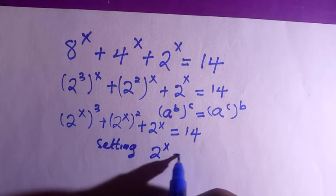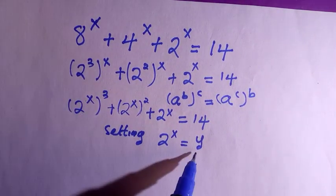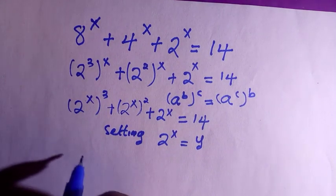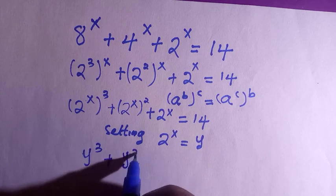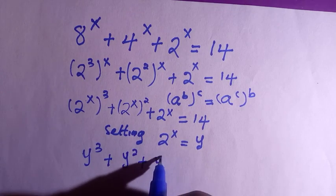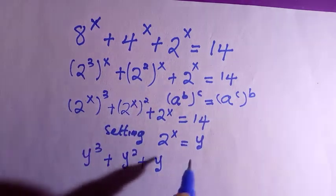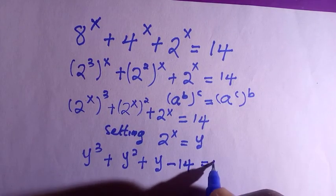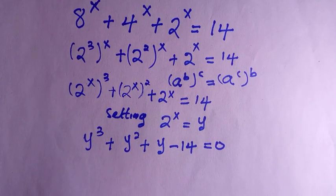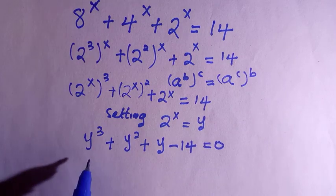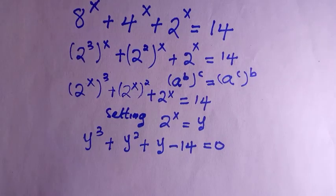Let's set 2 to the power of x to be a variable — I'll choose the letter y. Wherever we have 2 to the power of x, we replace it with y. So we have y cubed plus y squared plus y, and bringing 14 over gives us y cubed plus y squared plus y minus 14 equals 0. This is a cubic equation, and unlike the quadratic, I don't know a direct formula for it.